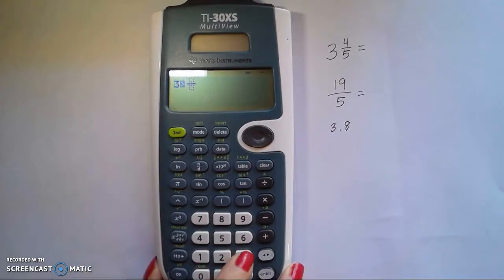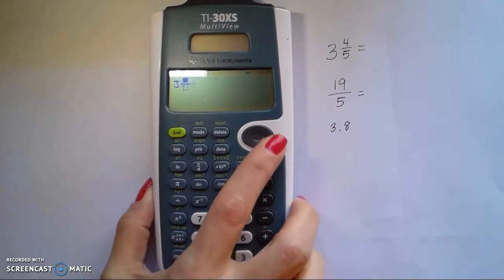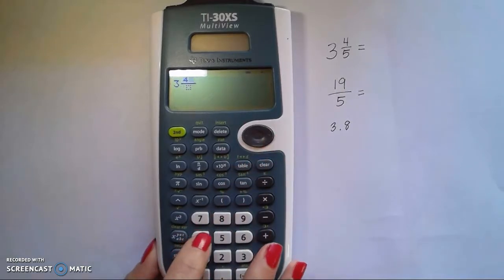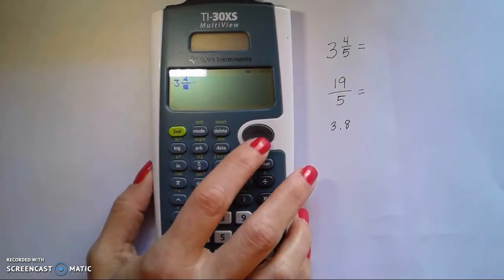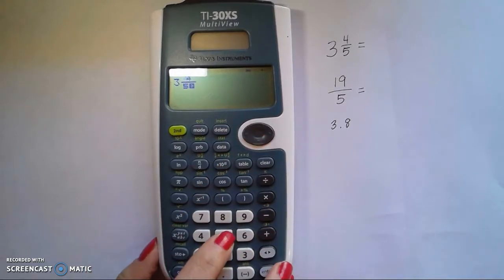We're going to type in 3 for a whole number and then we're going to toggle to the right. Now we're going to type in 4 for the numerator, toggle down, type in a 5 for the denominator and click enter.